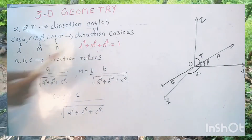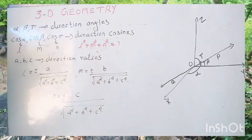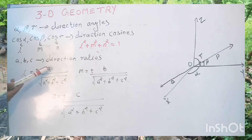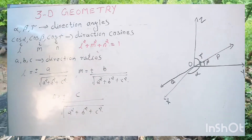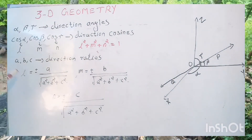Suppose direction ratios A, B, C are given and we need to find L, M, N — the direction cosines. The relation between direction ratios and direction cosines: L equals plus or minus A divided by the square root of A squared plus B squared plus C squared. M equals plus or minus B divided by the square root of A squared plus B squared plus C squared. N equals plus or minus C divided by the square root of A squared plus B squared plus C squared. These formulas are used to find direction cosines when direction ratios are given.